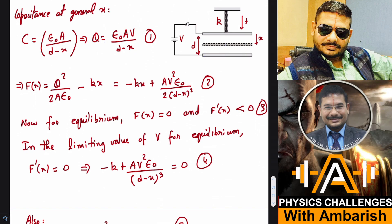The attractive force between the plates is Q squared by 2 epsilon naught A—that's a standard result. But there's also a negative force due to the spring, minus Kx. So the net force function is minus Kx plus AV squared epsilon naught upon 2(d minus x) squared. That's the force function—Q squared I've just substituted the value of Q, and that's how you're getting (d minus x) square and V square over here.